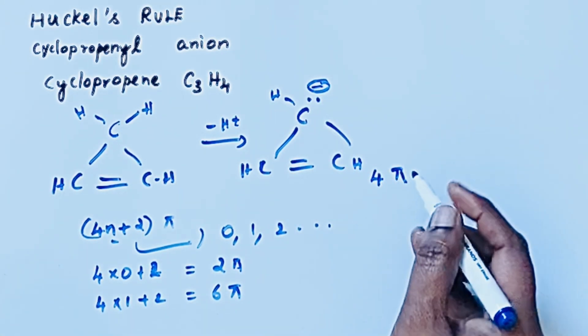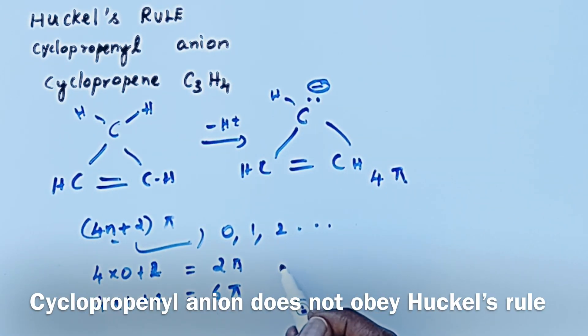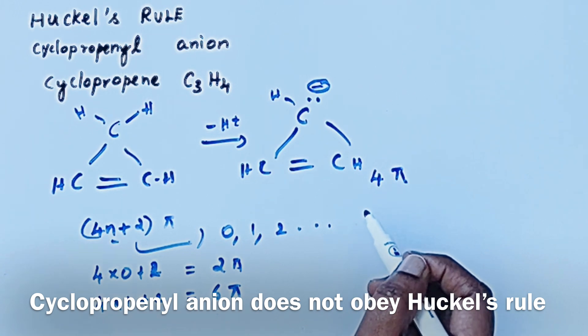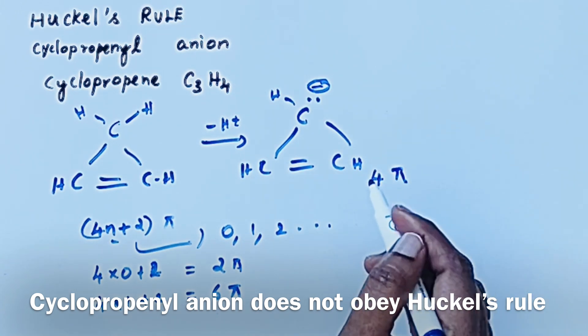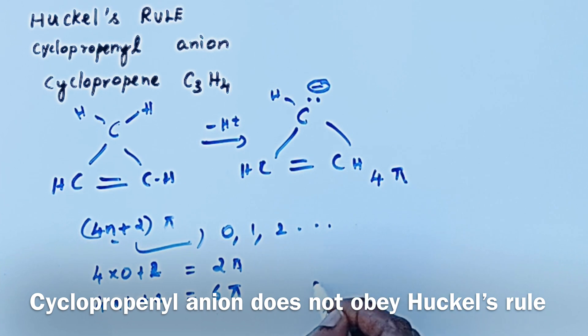But according to that, 2 pi, 6 pi, 10 pi electrons are aromatic compounds. So this compound cyclopropenyl anion does not satisfy Huckel's rule. Thanks for watching.